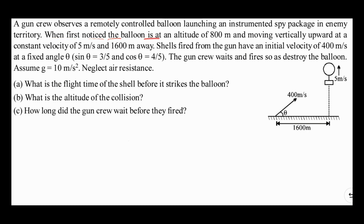When first noticed, the balloon is at an altitude of 800 meters. Someone is observing from here and the balloon is at 1600 meters distance and at an altitude of 800 meters. The balloon is moving upward with a velocity of 5 meters per second.